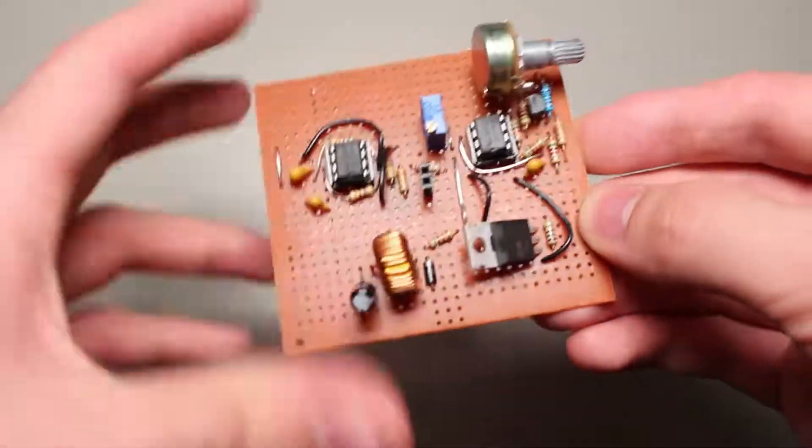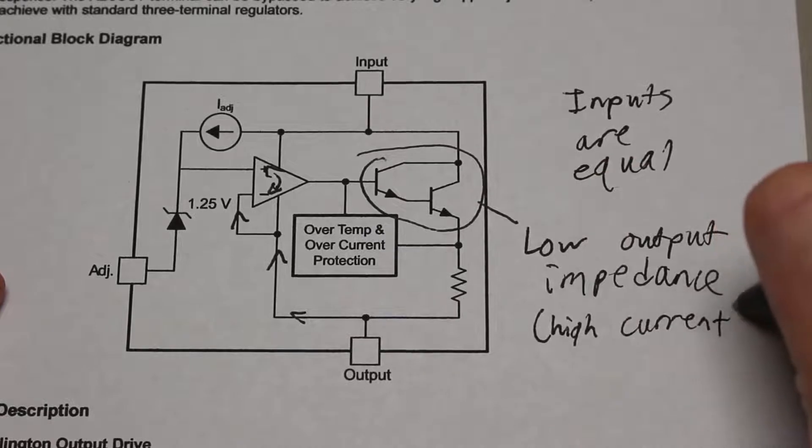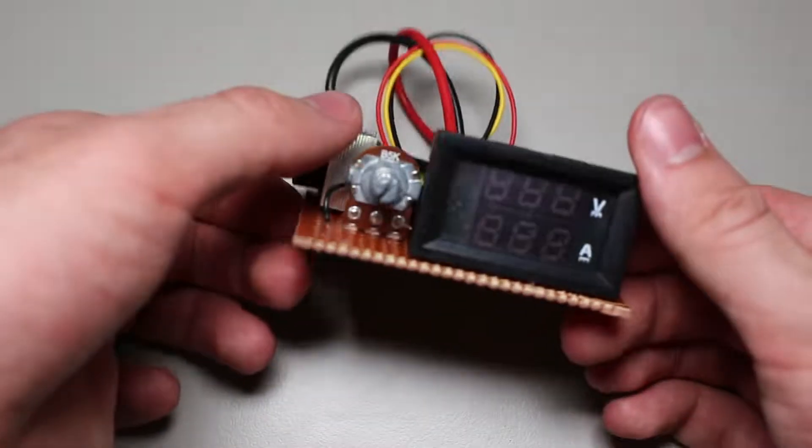In a previous video, I demonstrated how the LM317 works on the inside. Ultimately, we ended up making a larger version with a MOSFET and an op amp.